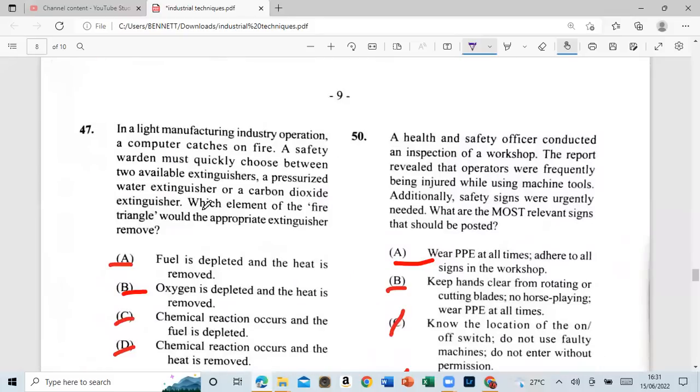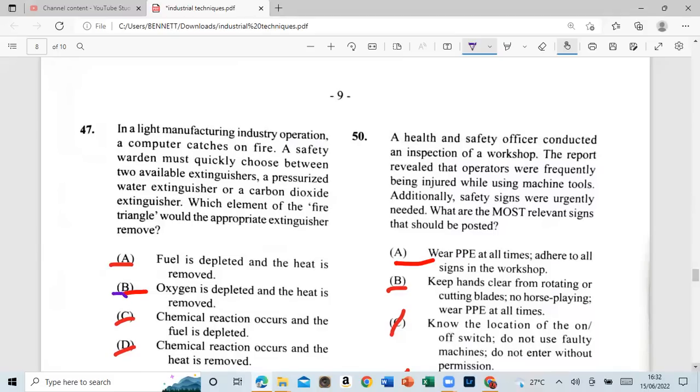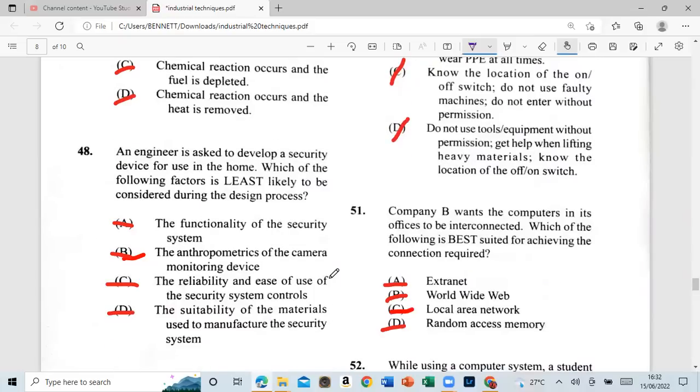Hit the light button, guys. Hit the light button. Hit the light button. All of them, when this level's changed, all of them did it. All of them did it. All right. All right. In a lighting manufacturing industry operation, a computer catches on fire. A safety warning was quickly choose between two available extinguisher. A pressurized water extinguisher or a carbon dioxide extinguisher. Which element of the fire triangle should the appropriate extinguisher remove? Is it A: fuel is depleted and the heat is removed? B: oxygen is depleted and the heat is removed? What's your answer for that, guys? Type between them all? We're not dealing with it. If you had said oxygen depleted and the heat is removed, you are correct. It is B. All right. So let's move on to 48.